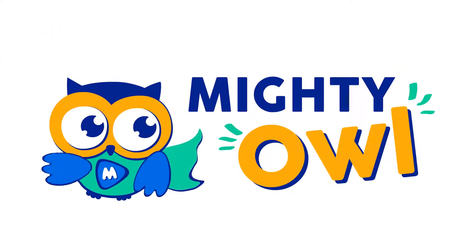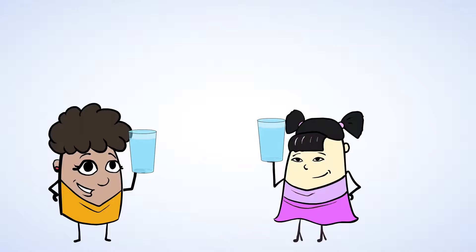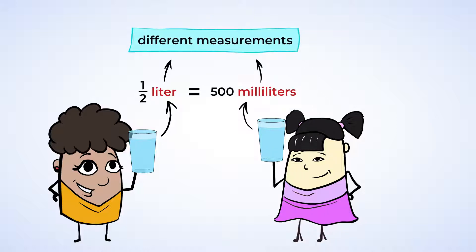Hello, this is Mighty Owl. Imagine that you and your friend each have glasses of water. You have one half of a liter of water, and your friend has 500 milliliters of water. Now you might think that those 500 milliliters are a lot more than your half of a liter, since you're talking about the number 500. But actually, they're the same amount of water. It's all about the different measurements.